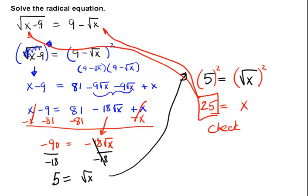25 minus 9 does give us a 16 inside of a square root, which we all know is a 4, and if you put 25 inside of this radical here, that gives us the square root of 25, which is a 5, so we're left with 9 minus 5 on the right side, which is also a 4. So yes, 25 is our final answer, which solves this equation.